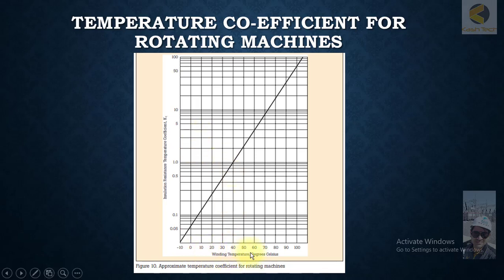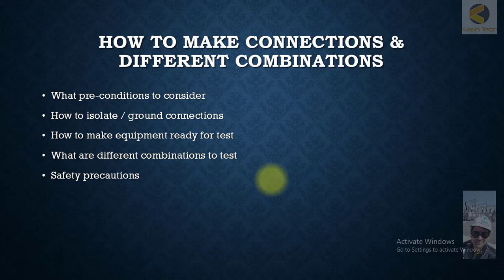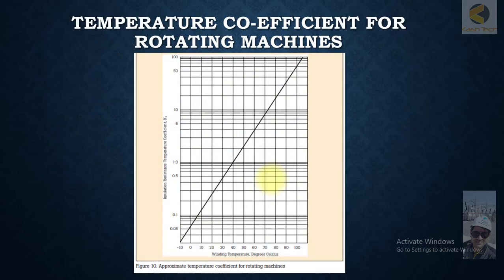Here you can see the winding temperature and there's a curve. If temperature is increasing from minus 10, for example, then this insulation resistance temperature coefficient is also increasing. You can get these curves from the manufacturer of specific items and then calculate equivalent temperature. Thank you very much for this small topic.